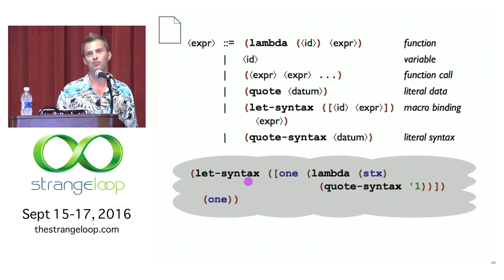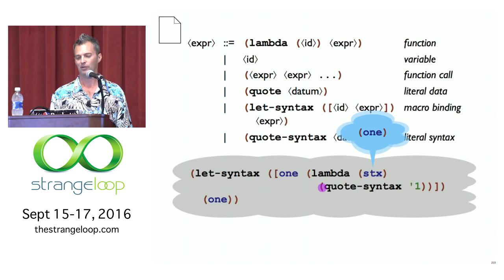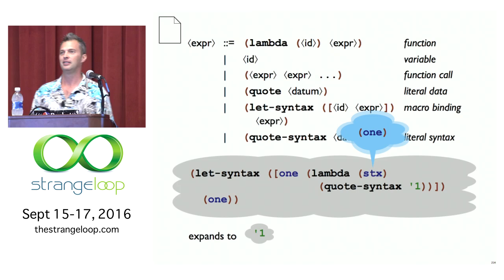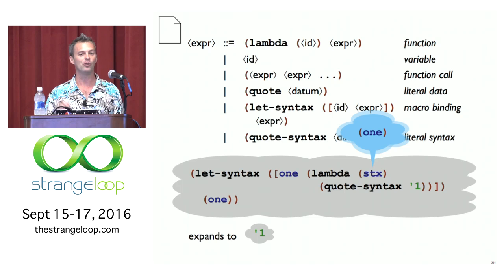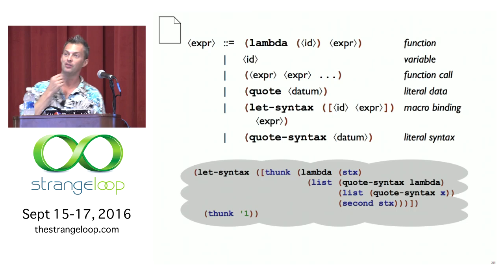For example, here's the simplest macro — a dumb but simple one. Let-syntax lets the macro one be a function that takes a representation of one. The use calls the macro with zero parts, so the use one goes in as the argument to this function. What it returns is quote-syntax of quote one — so quote one will be the expansion. The whole expression expands to quote one because we used a macro, and then after expanding macros, the definitions can go away.